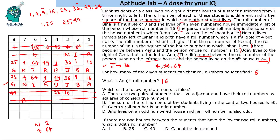Checking which statements are false: 'There are two pairs of students living adjacent with roll numbers as squares of consecutive numbers' — checking both cases, this holds true in either arrangement. 'The sum of the roll numbers of students in the central two houses is 50' — the central two positions have roll numbers 49 and 1, so that's 50, also true. 'Gita's roll number is an odd number' — this should be checked. 'Jenu lives on an odd-numbered house' — yes, and her roll number is even (36), not odd. So that is a false statement.